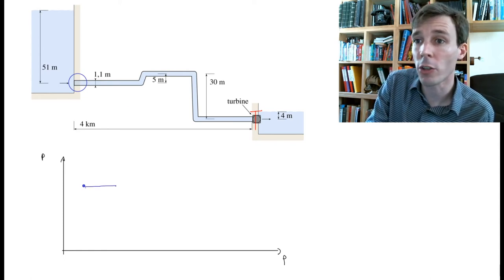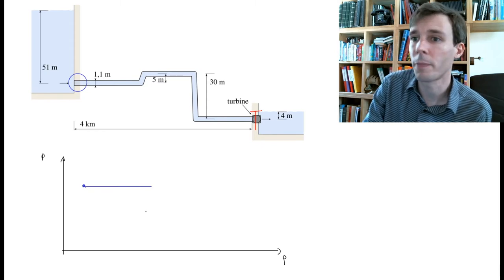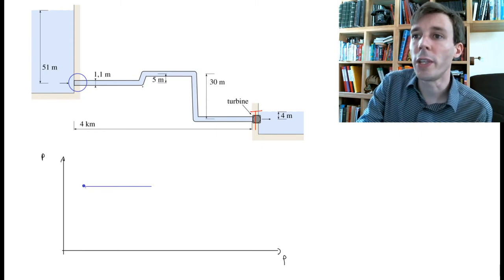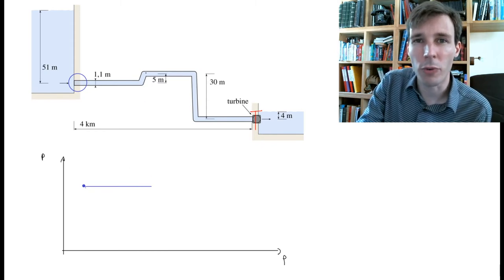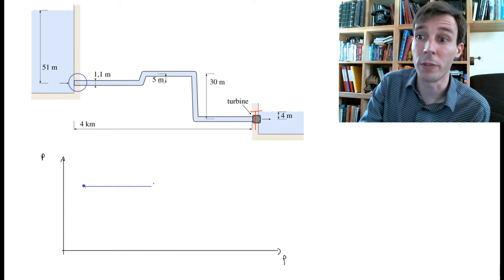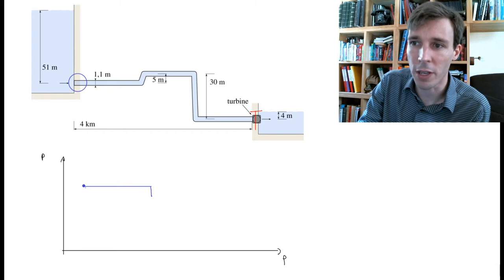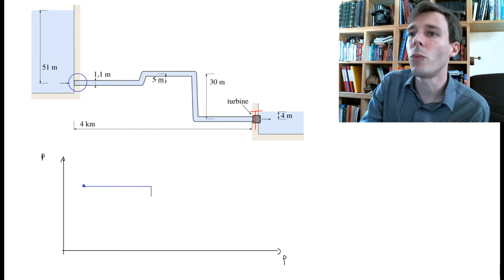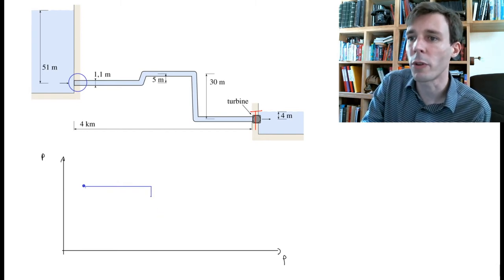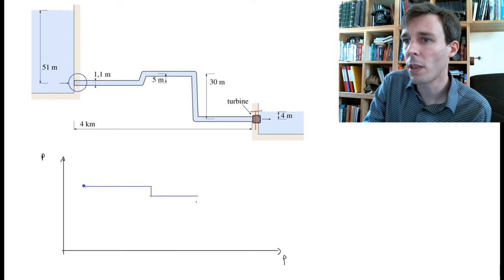We just have a straight curve here until the first bend. As we now go up, the pressure will drop or decrease because our altitude decreases, so we see a little dump here in the pressure. Then we go horizontally again so the pressure remains constant with respect to length.